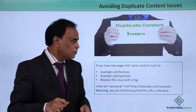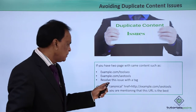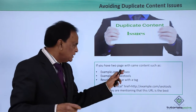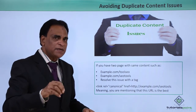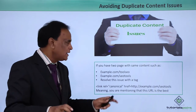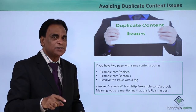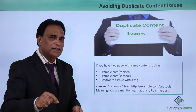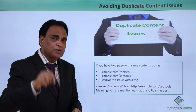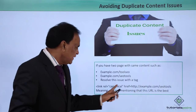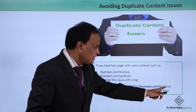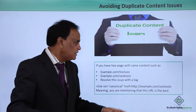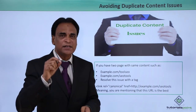Regarding duplicate content issues — if you have two pages with the same content, such as example.com/tool-seo and example.com/seo-tools, these are two different pages but the content is more or less the same. When Google indexes them, it creates a duplicate content issue. You need to specify to Google via a canonical link which is the correct URL to be indexed. This is achieved by adding: link rel="canonical" href="example.com/seo-tools" — indicating this is the original, correct URL to index, avoiding duplicate content issues.